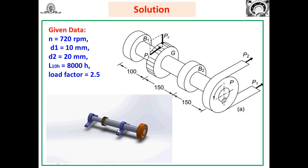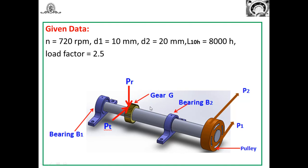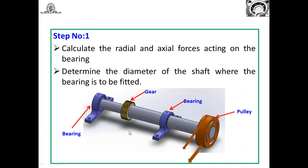The radial force Pr acts on the gear in the vertical plane, and the weight of the pulley acts downward, also in the vertical plane. The tangential force Pt and the belt tensions P1 and P2 act horizontally. So we consider Pr and pulley weight in the vertical plane, and Pt, P1, P2 in the horizontal plane.